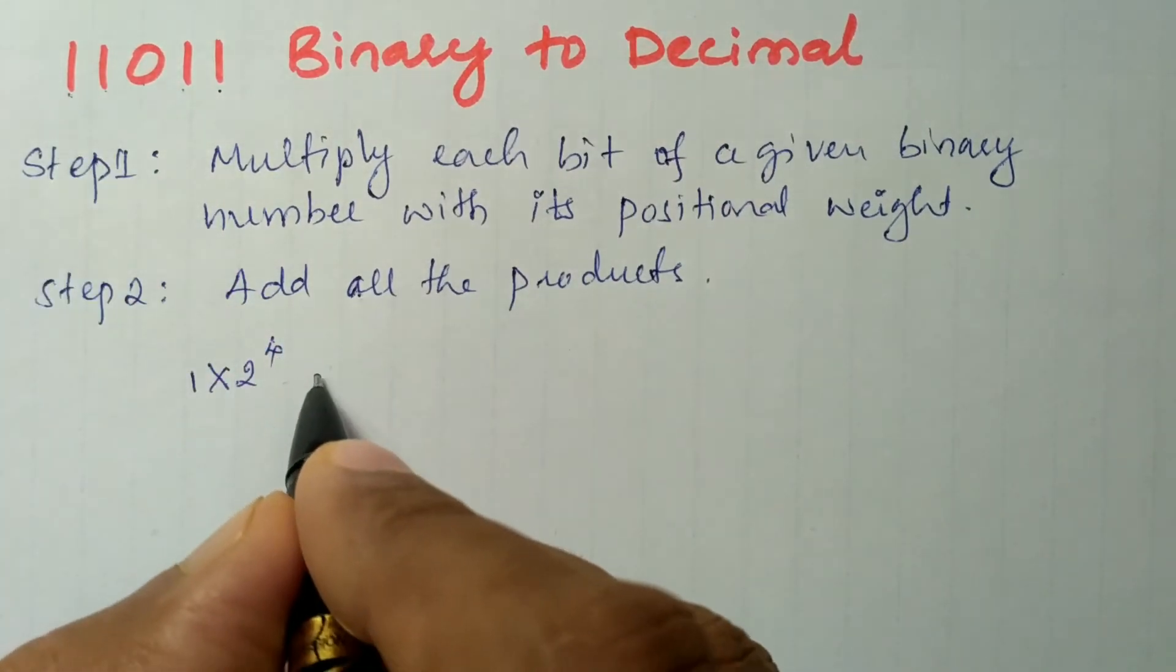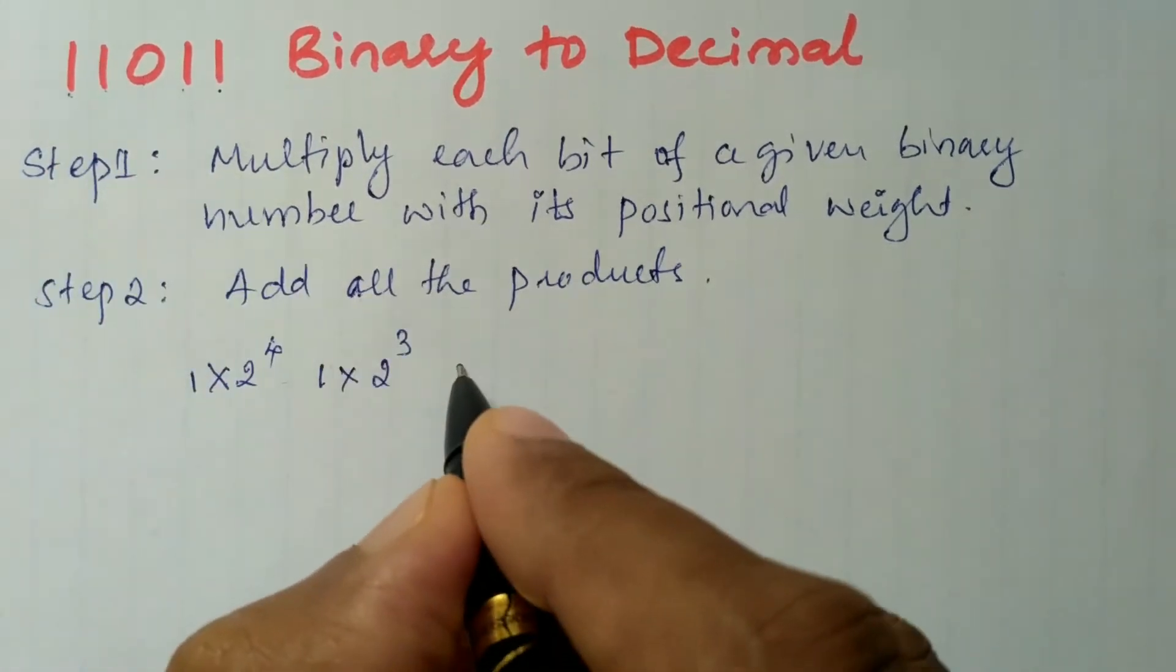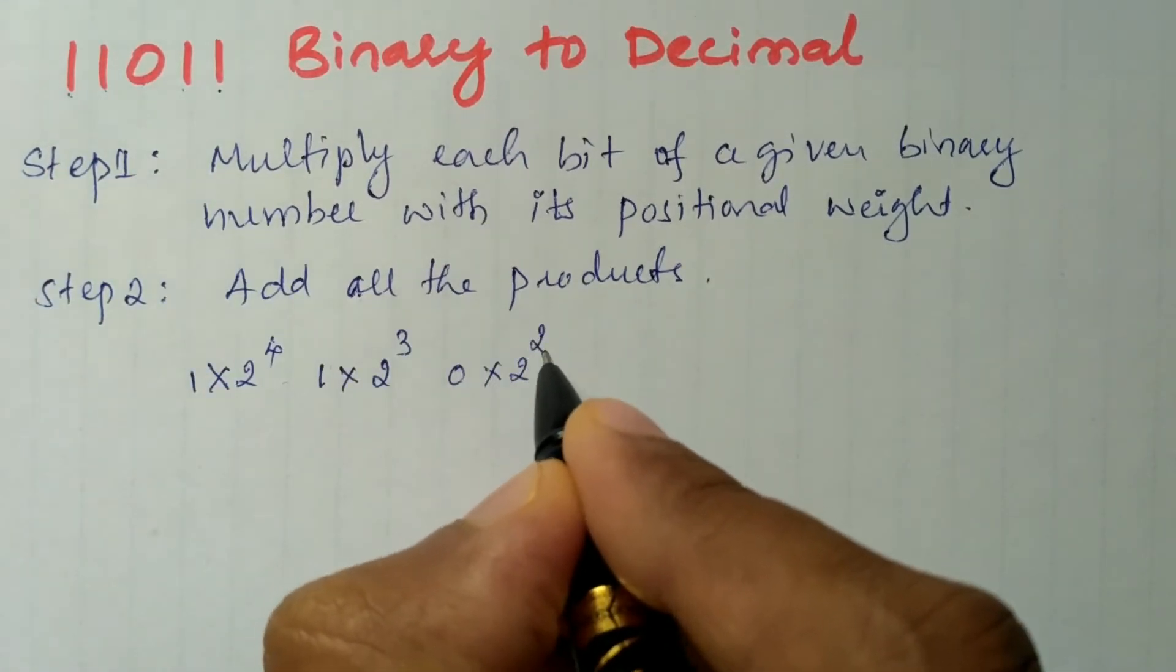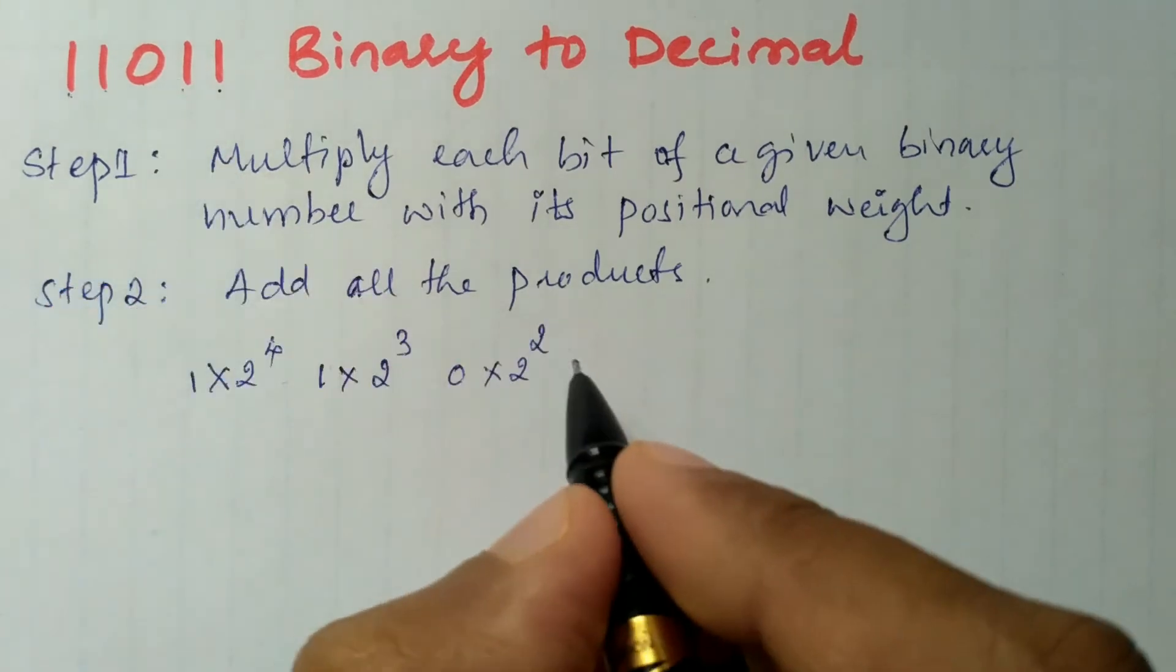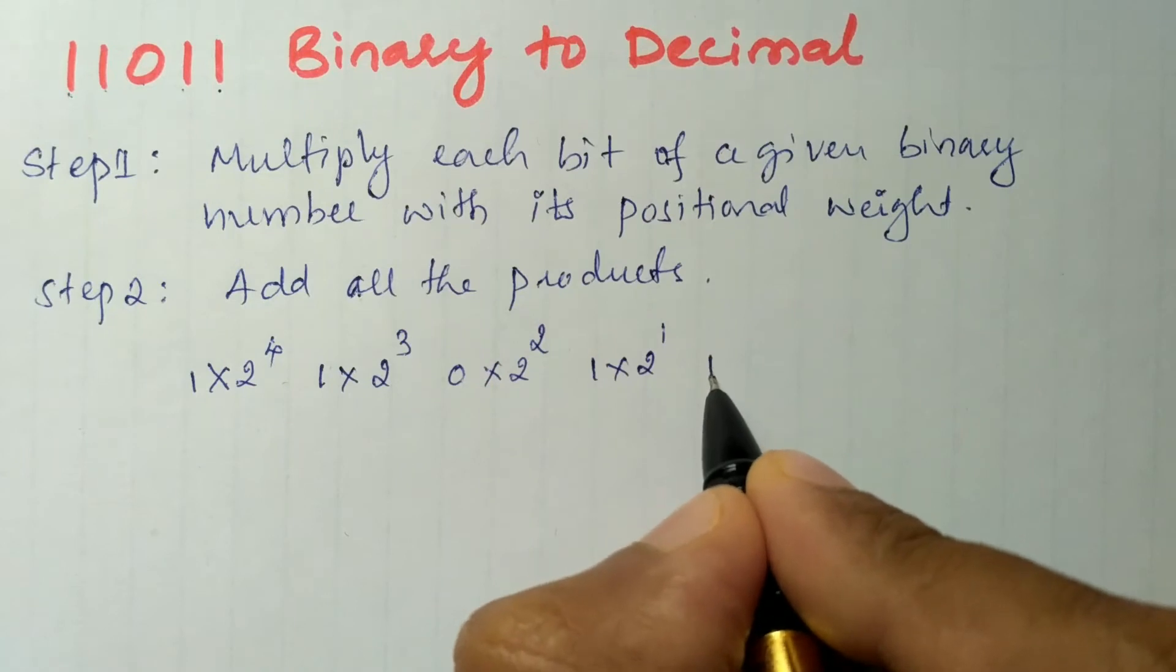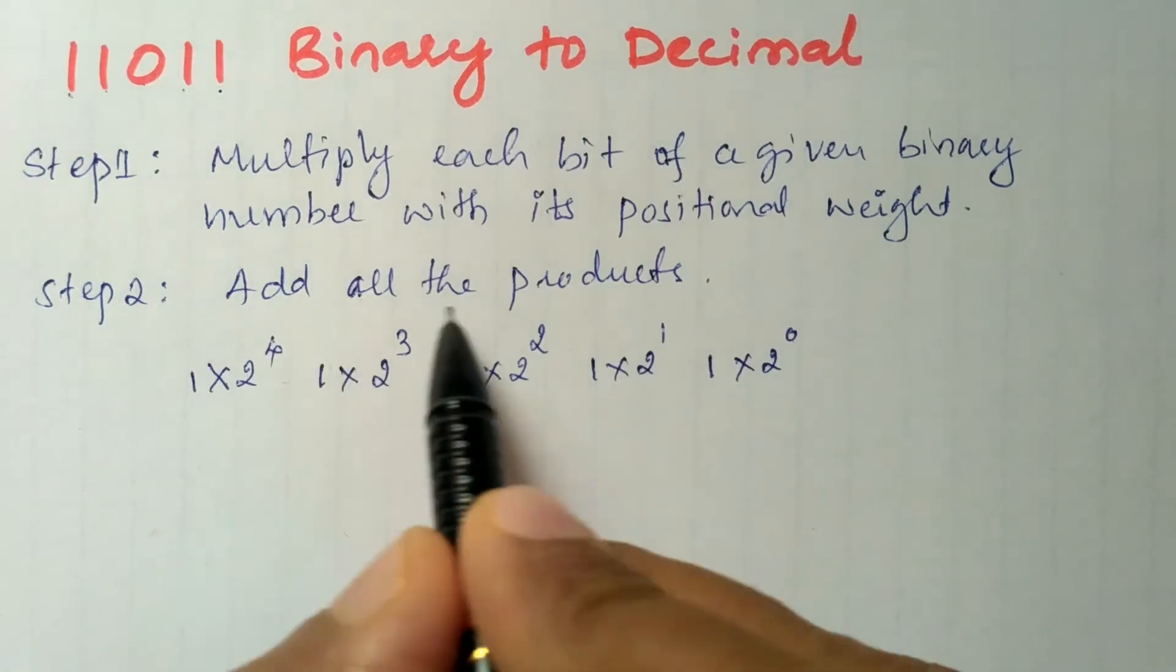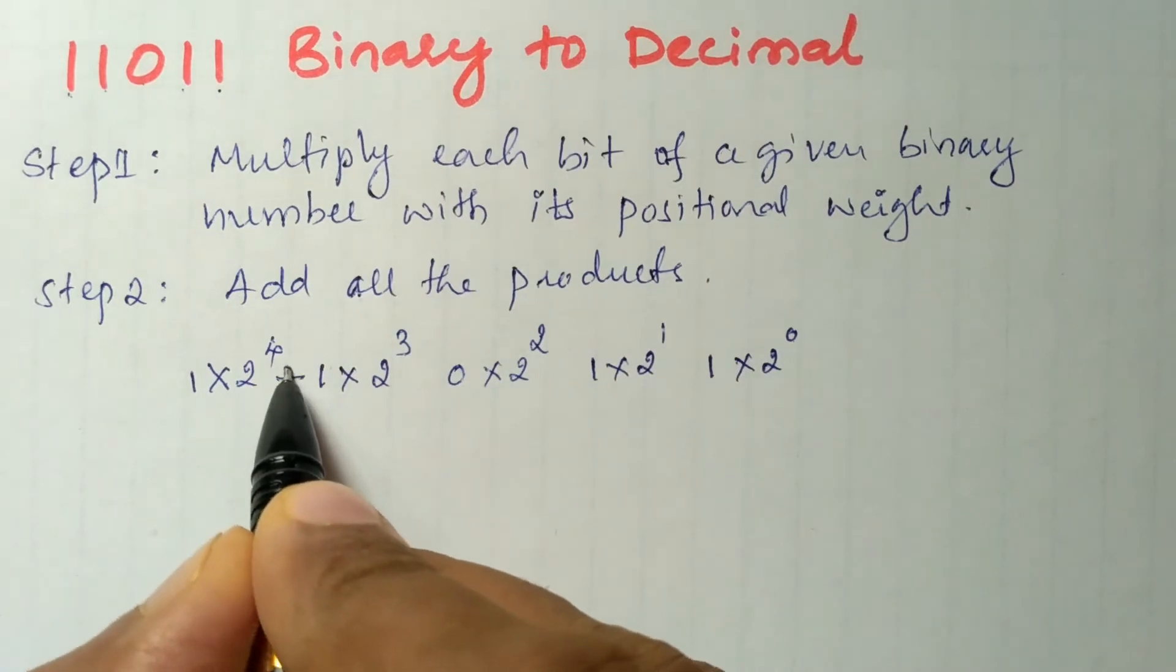Next bit is 0×2^2. Similarly, I will write 1×2^1. Next is 1×2^0. The second step says to add all the products, so all of these products are to be added. I will write plus signs.